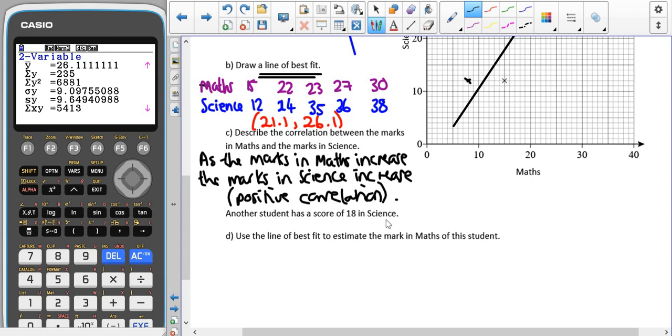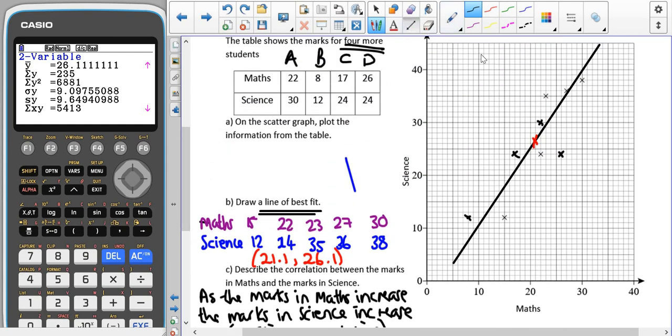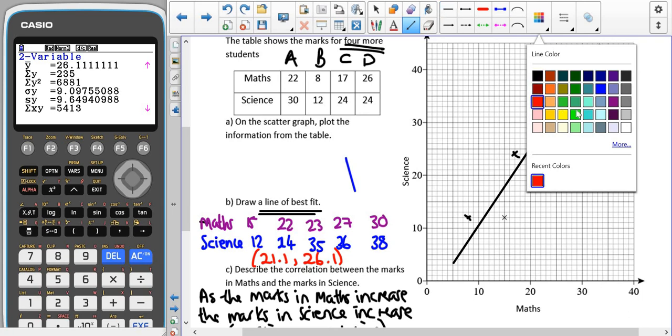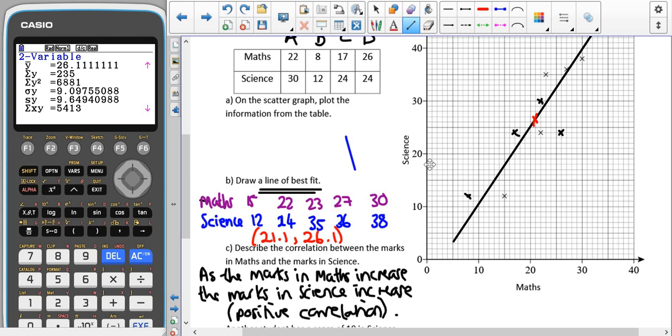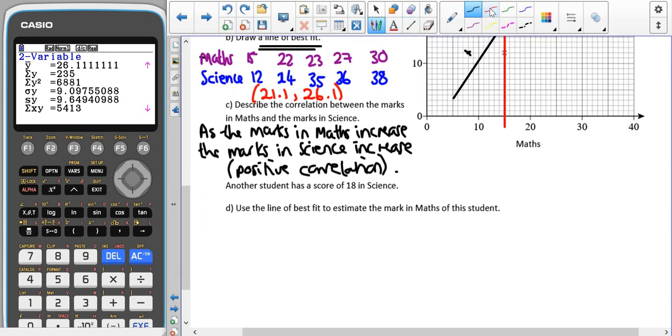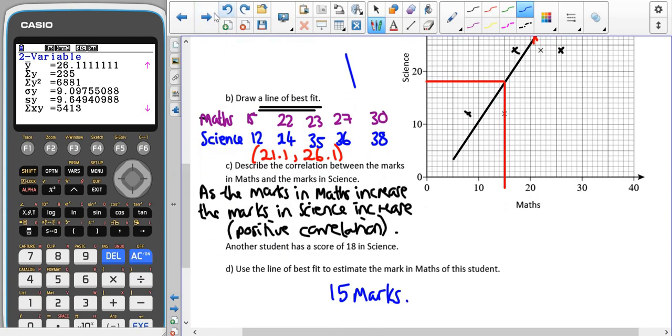So here we've got another student has a score of 18 in science. Use our line of best fit to estimate what they would get in maths. So remember that this is only an estimate, because again, we're only saying that there's a correlation between these two. So we're saying that they got 18 in science. So if we read across from 18 until we hit our line and then read down, they should hopefully get about 15 marks. And hopefully you've done this sort of thing at GCSE.